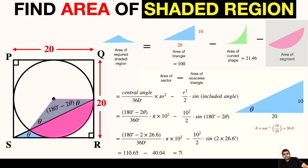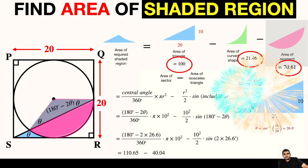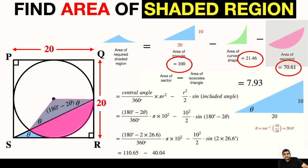This will give us 70.61 so the area of segment will be 70.61. Now we can perform the calculation. The area of required shaded region will be 100 minus 21.46 minus 70.61. So our area will be 7.93 square units.